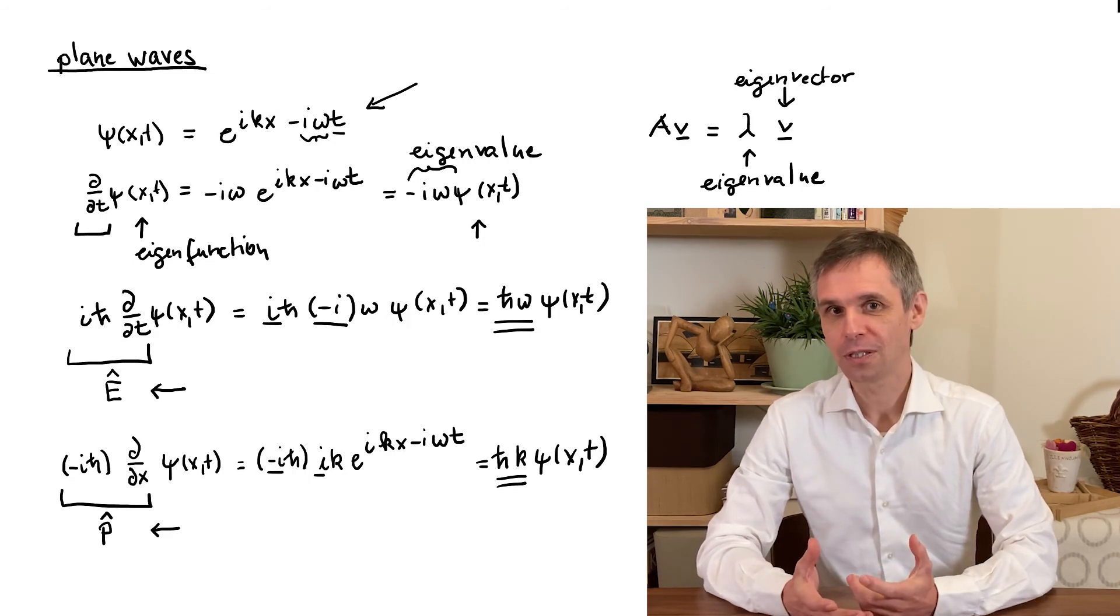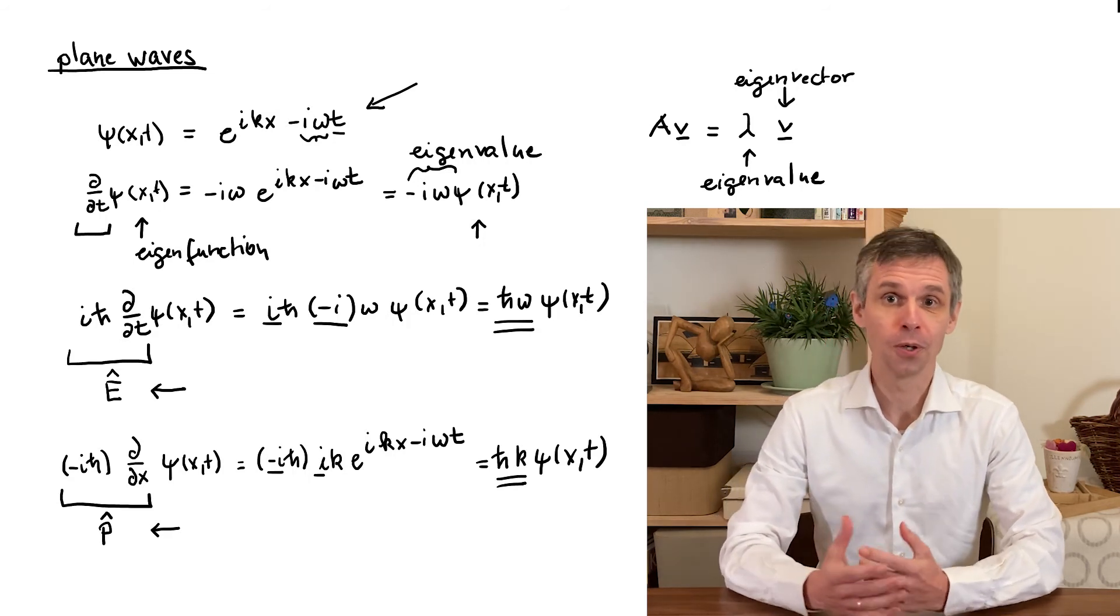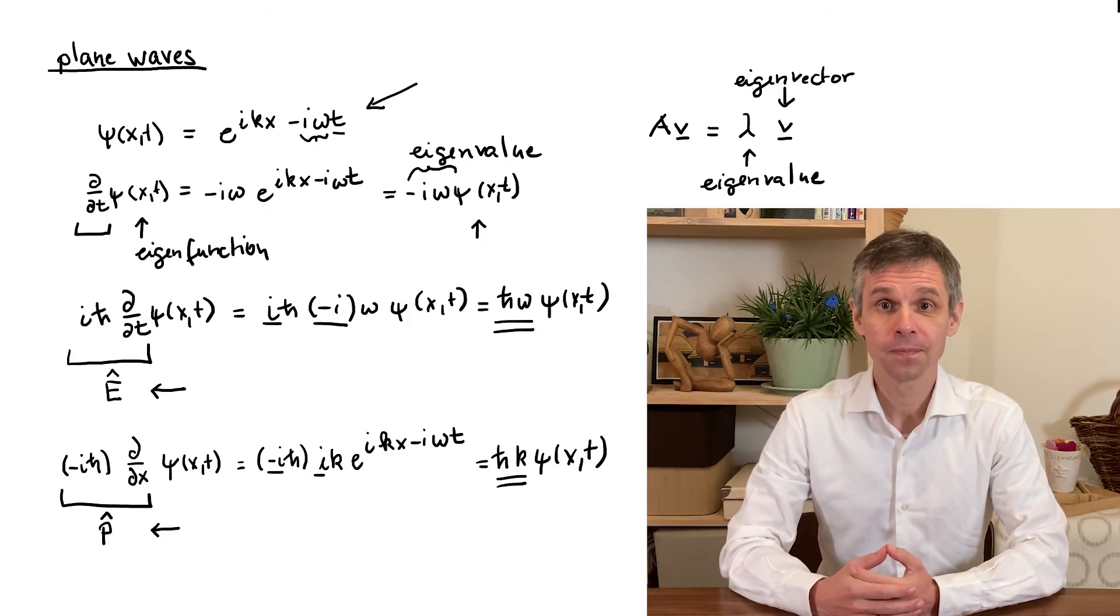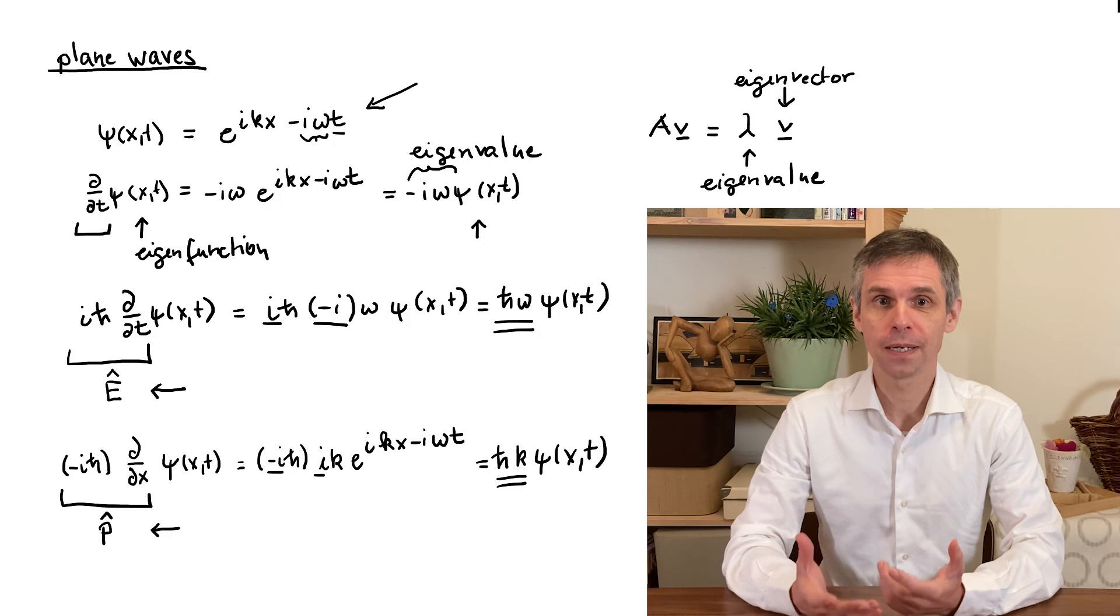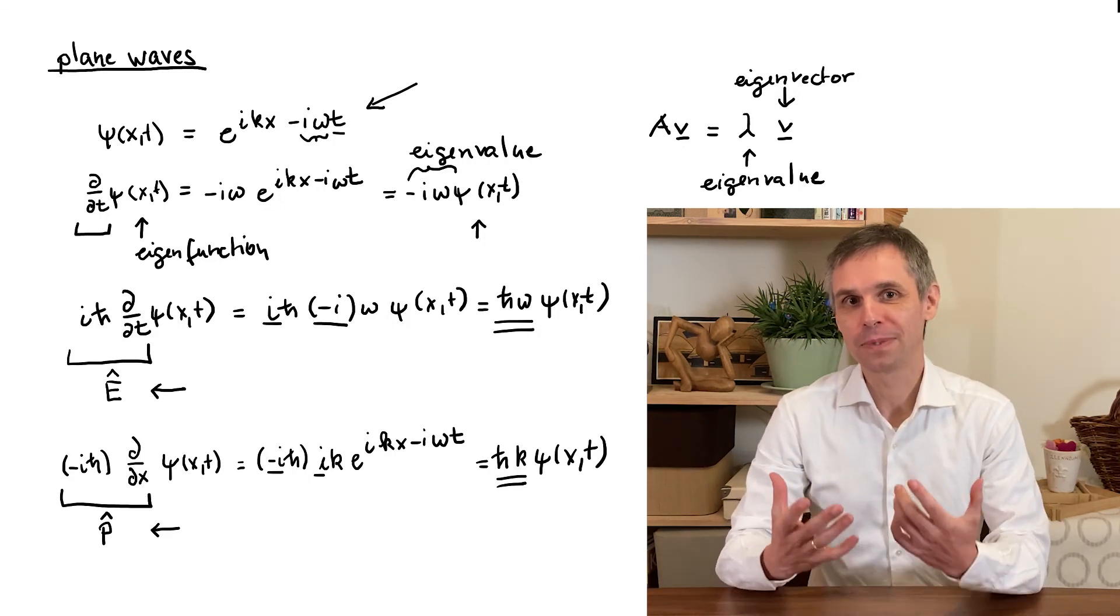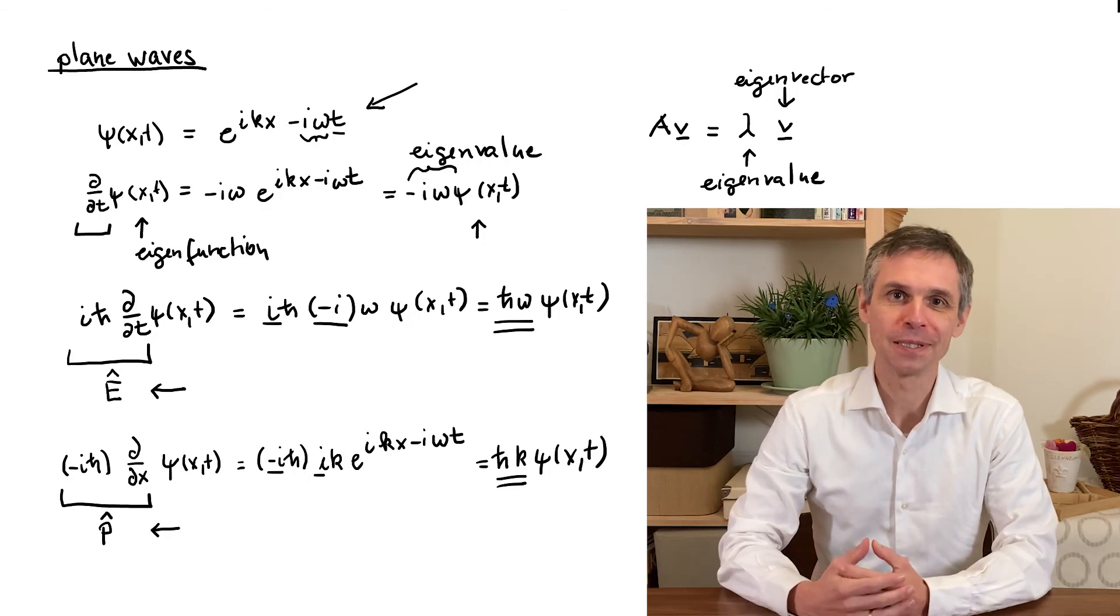Now a key feature of waves is that they can be superimposed which not only results in wave interference but here would lead to a situation where a particle does not have a fixed energy and momentum. The particle is then simply described by a wave function that is not a plane wave.